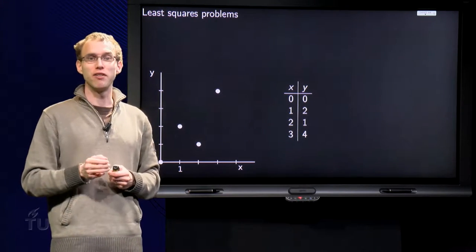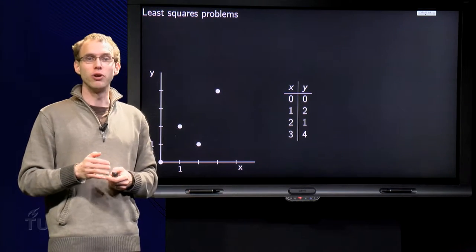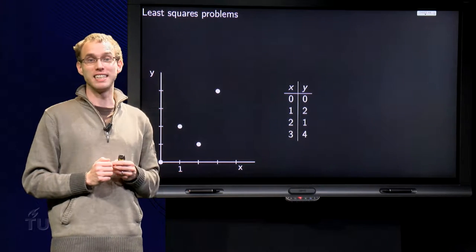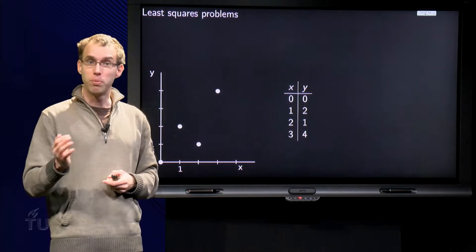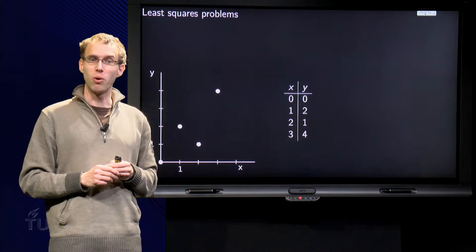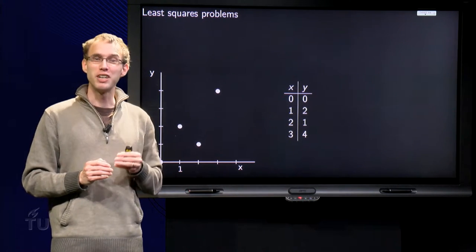An example is the stretching of a spring y as a function of the weight x, so you put different weights on the spring and measure how far it is stretched. If you do not stretch too far, so no permanent deformations occur, your spring will obey Hooke's law. This means that you expect your points x, y to be on a line.